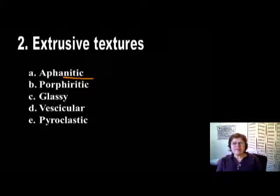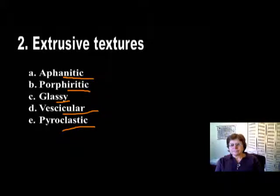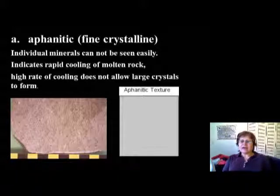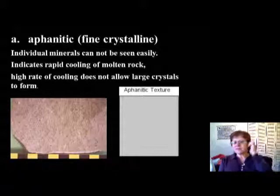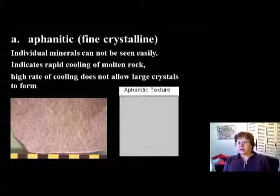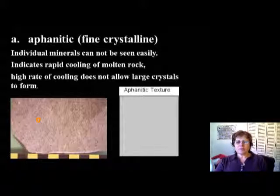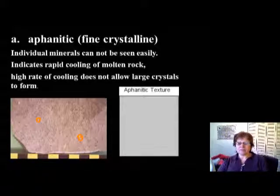The extrusive texture types are aphanitic, porphyritic, glassy, vesicular, and pyroclastic. The aphanitic texture means that as the magma comes to the surface, the minerals cool down really quickly and don't have time to grow, so they stay as tiny crystals and the rock becomes very fine-grained. You basically cannot see any crystals, though up close you might see some patches of biotite, amphibole, or K-feldspar in the fine-grained matrix.